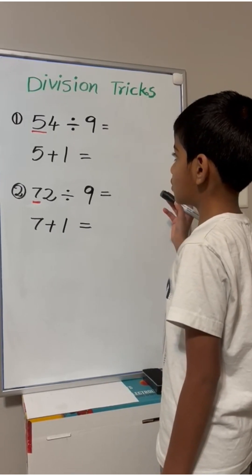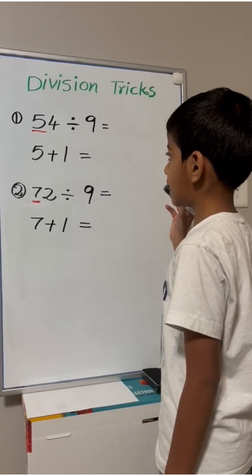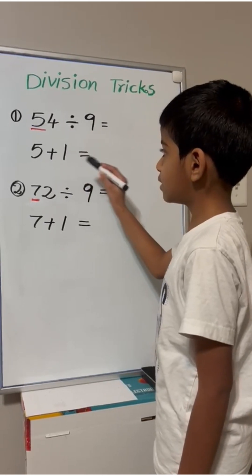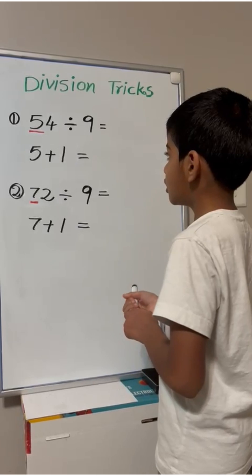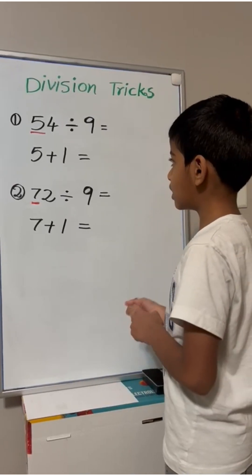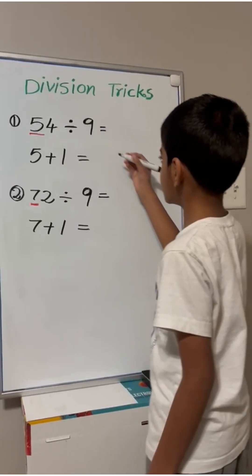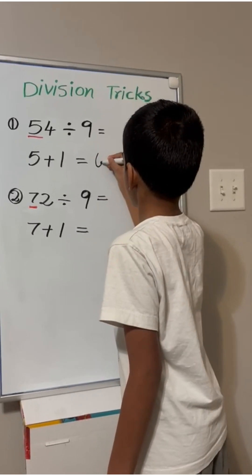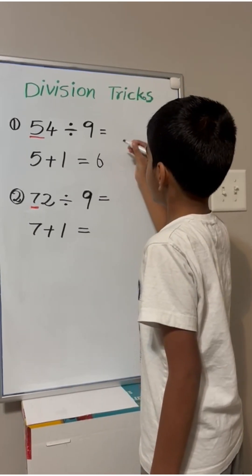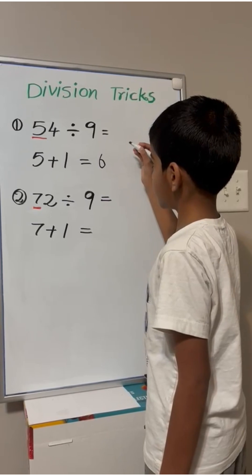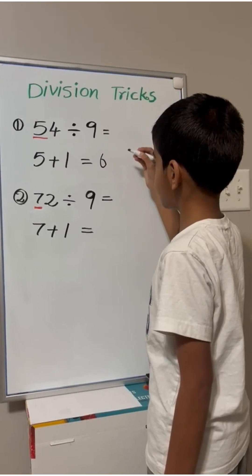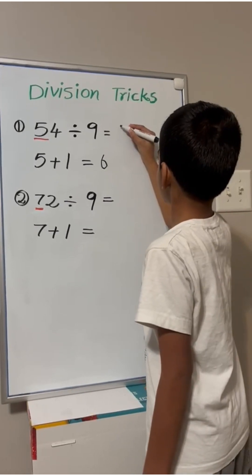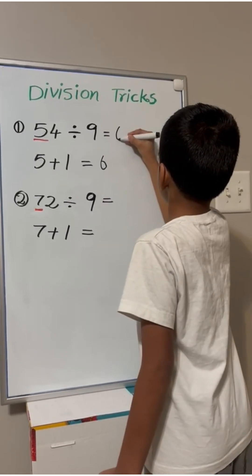So, we can add 5 plus 1. 5 plus 1 equals 6. So, the answer to 54 divided by 9 equals 6.